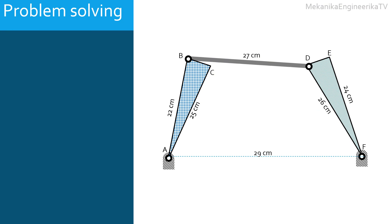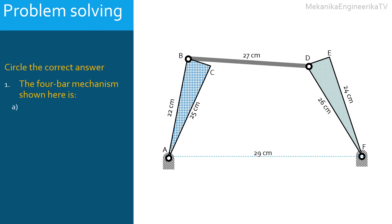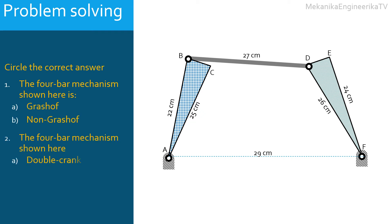In this problem we are asked to determine if the mechanism shown here is a Grashof or non-Grashof mechanism, and if this mechanism is a double crank, double rocker, or crank-rocker mechanism.